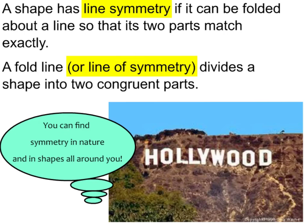First we have to know what line symmetry is. Here's a definition. A shape has line symmetry if it can be folded about a line so that its two parts match exactly. A fold line, or line of symmetry, divides a shape into two congruent parts. Remember, congruent means same size, same shape.